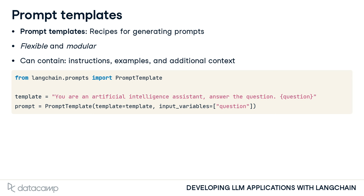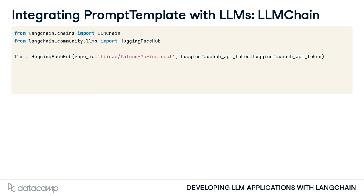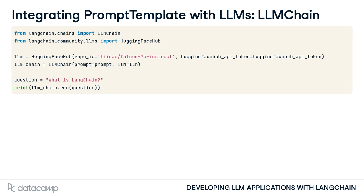Now that we have our PromptTemplate, let's integrate it into a model. Different components are combined together in LangChain using chains, and we'll use the LLM chain to chain the PromptTemplate to an LLM. We start by choosing an LLM — in this case, a Falcon model from HuggingFace. Next, we pass the PromptTemplate and model to the LLM chain function. To begin passing user inputs, we call the run method on the chain, passing the input string.